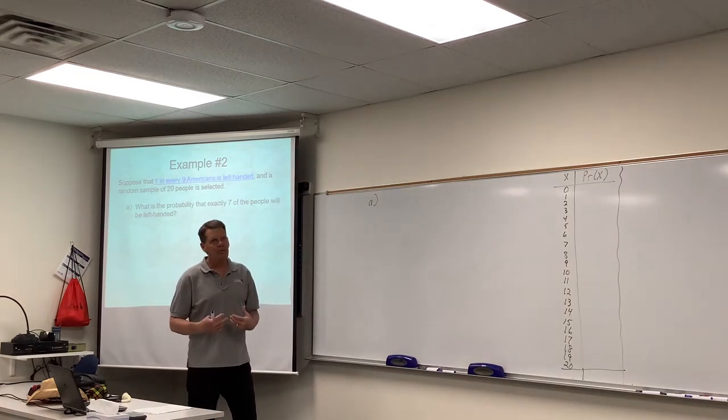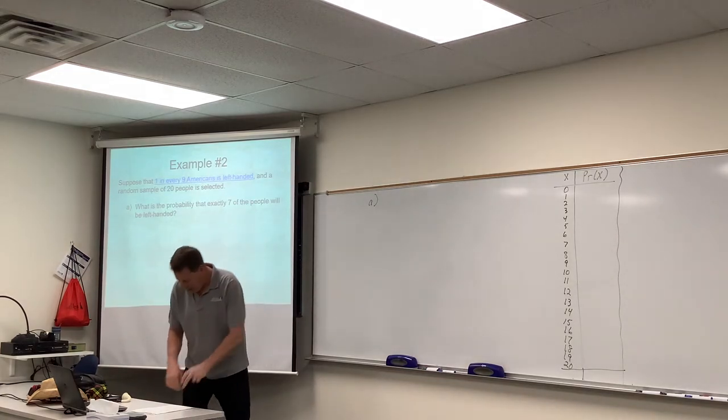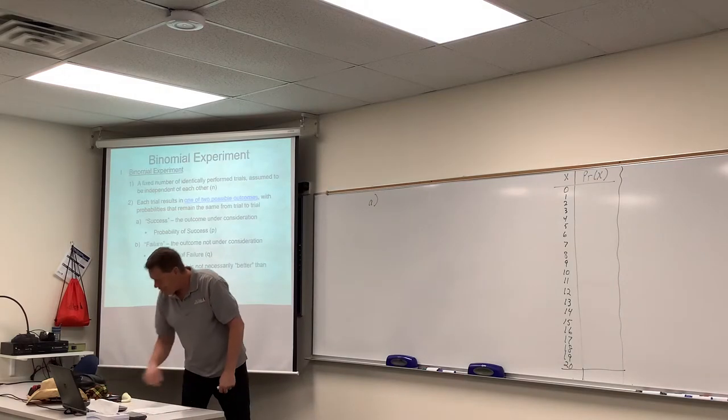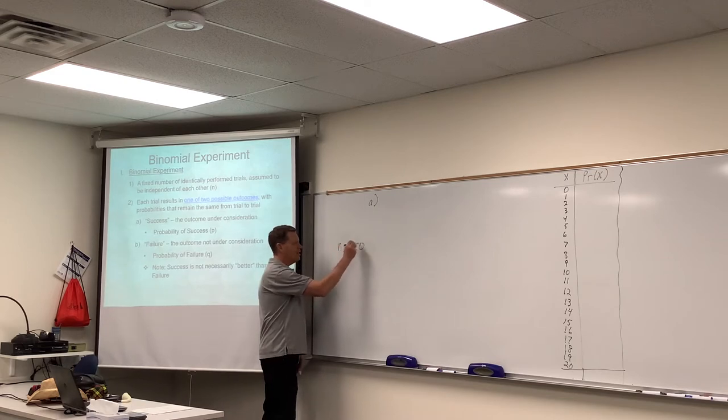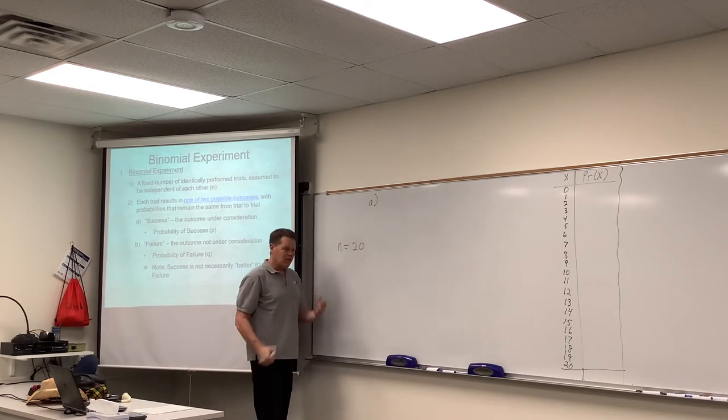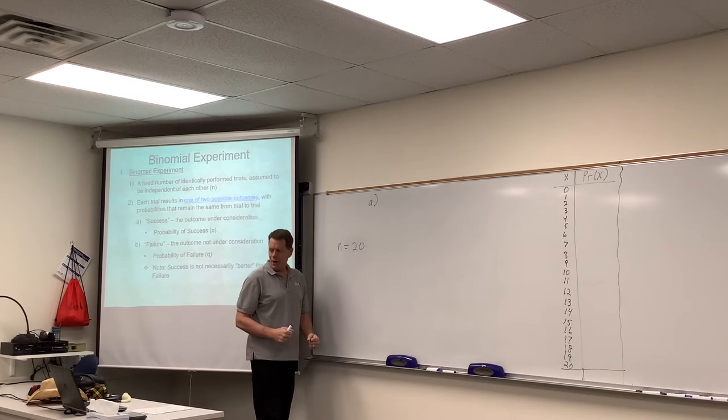If you think about it, this would be a binomial experiment because we've got 20 people. It's like we're going up to each of the 20 and asking them if they're left-handed. Each of those individual people would be their own trial. That's the value of n for this situation.